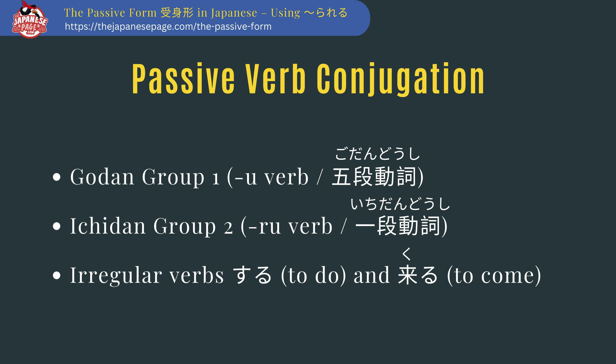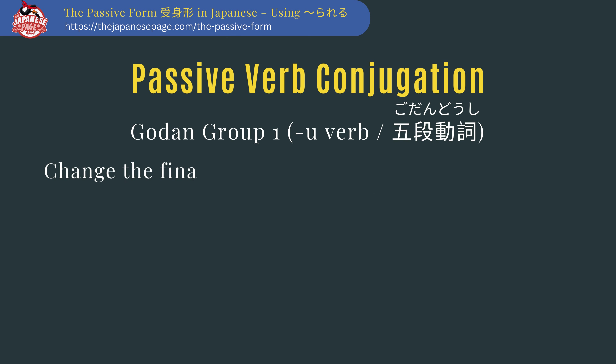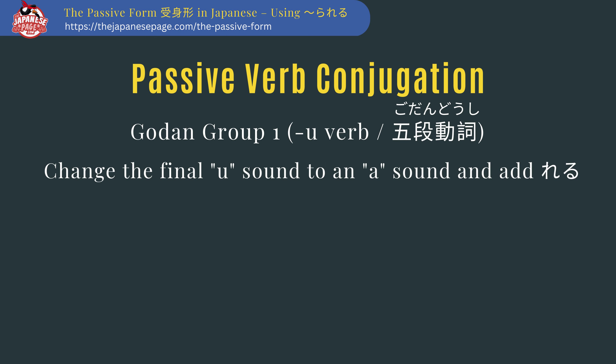Passive verb conjugation. If you study Japanese verbs, you know that there are three types. Different grammar books use different names, but the most common are: godan (group 1), the u-verbs; ichidan (group 2), the ru-verbs; and the two irregular verbs.